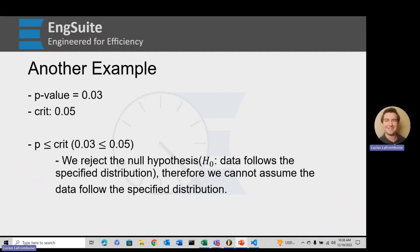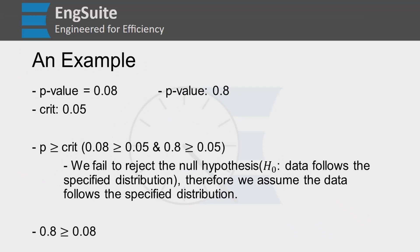As engineers, the goal is to give you the ability to explain results so nothing comes as a surprise. Consider a p-value of 0.08 versus a p-value of 0.8 — both are greater than or equal to our critical value of 0.05, so in both cases we fail to reject the null hypothesis and assume the data follow the specified distribution. However, your customer and you will be much happier with a p-value of 0.8, because even though both pass, one is a much safer pass.